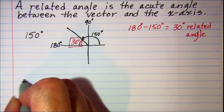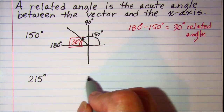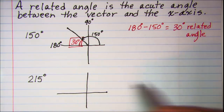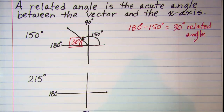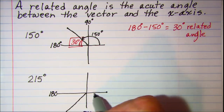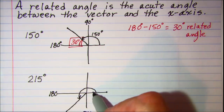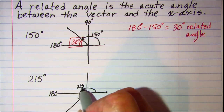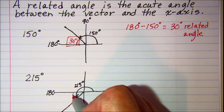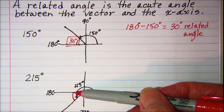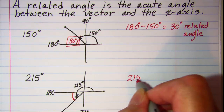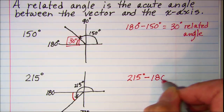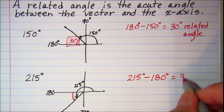If our vector was at an angle of 215 degrees, 215 is more than 180 and less than 270, so this angle would lie in quadrant 3. We measure from the positive x-axis counter-clockwise. The related angle or reference angle is the acute angle formed by the x-axis and the vector, found by taking 215 minus 180. So our reference angle is 35 degrees.